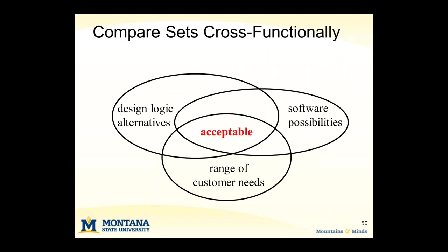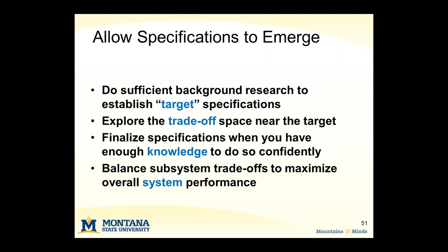Think of it as a Venn diagram of alternatives — you're really looking for where's that overlap in the different possibilities and alternatives in terms of where you're going to find your acceptable designs. One thing that's really helpful in this convergence process is if you can have some flexibility in your initial specifications. It's very difficult to set specifications early in a project because you have the least amount of knowledge at that point. So if you can have a little flexibility through target specifications, and then after you understand the tradeoff space, narrow in on exactly what specifications you want — that can really help speed up your design process and maximize overall system performance.